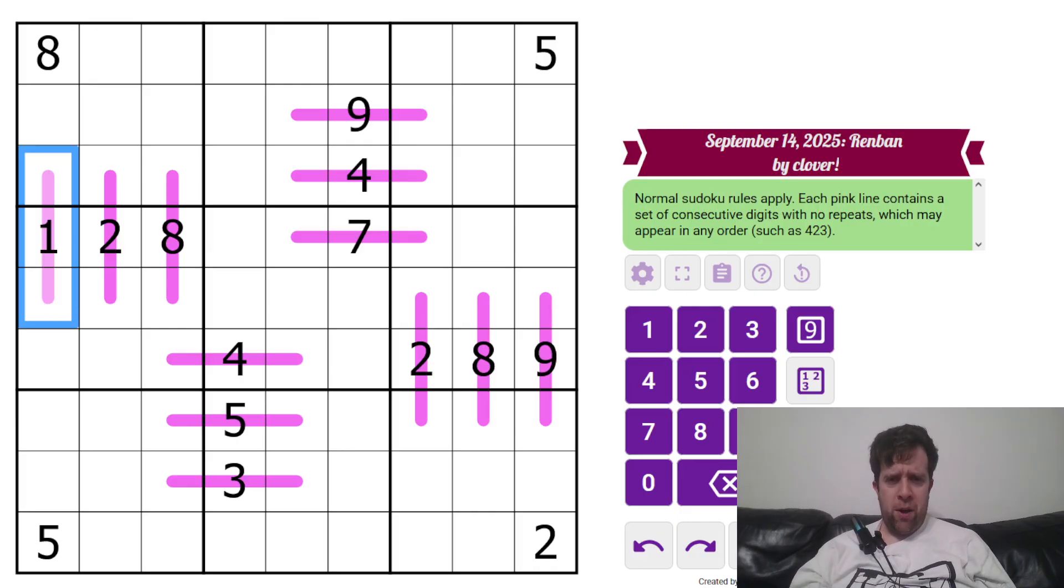They're purple on my screen, pinkish purple. Each pink line contains a set of consecutive digits with no repeats, which may appear in any order, such as 4, 2, 3. So this could be 4, 5, 6, but it could also be 6, 5, 4. That's it. That's all you need to know to solve today's puzzle. That being said, I'm going to jump into it now. Let's do it.